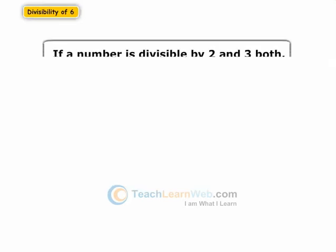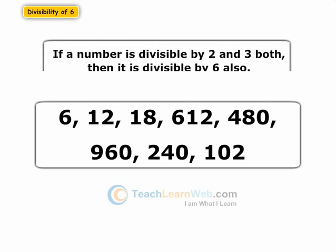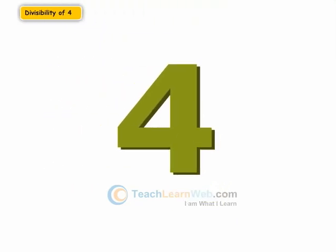Now let us do the same for 6. If a number is divisible by 2 and 3 both, then it is divisible by 6 also. What about the number 4?